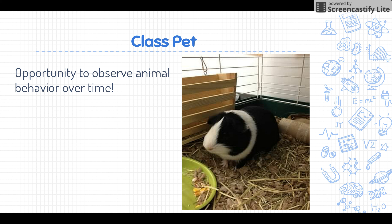If you have a class pet, this is a great opportunity to bring it into the discussion and the learning. We had a guinea pig named Michael Jackson — I got him through a Pets in the Classroom grant and the kids named him. We kept an observation chart next to his habitat, and anytime a student observed a behavior they could go write it on the chart. When we were sharing observations and comparing and contrasting how different animals interact within their habitat, we could bring Michael Jackson into that conversation. It's always great to observe something over a long period of time. I hope you enjoy the millipedes and we'll see you in the next screencast.